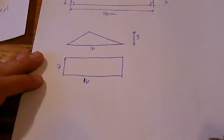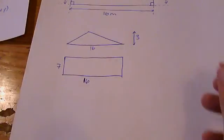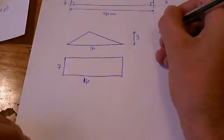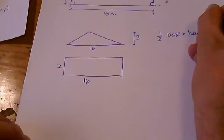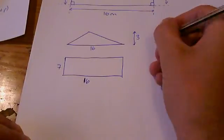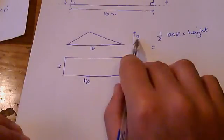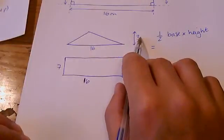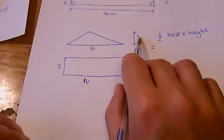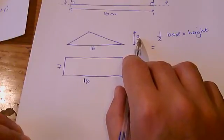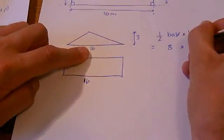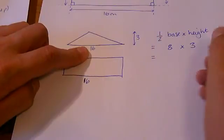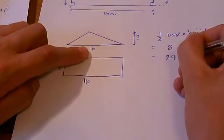So now I've split my shape into two smaller, more familiar shapes, I can use their formulas. This is a triangle, so I have to use the right formula: half base times height. Now 16 times 3 makes 48, and then you half it to make 24. That would be one way of doing it. I'm going to half the base first and do 8 times 3, which is 24. It's a bit easier to do that way.